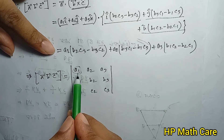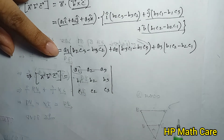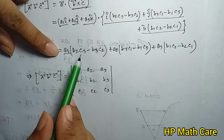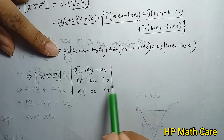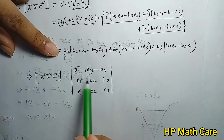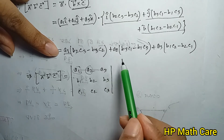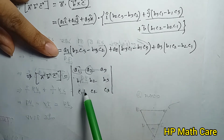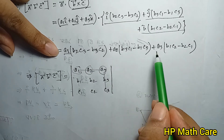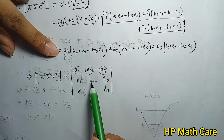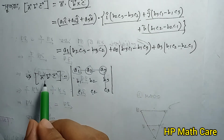So we get: a1 times (b2c3 minus b3c2), minus a2 times (b1c3 minus b3c1), plus a3 times (b1c2 minus b2c1). This matches the 3x3 determinant expansion along the first row, confirming the box product formula.